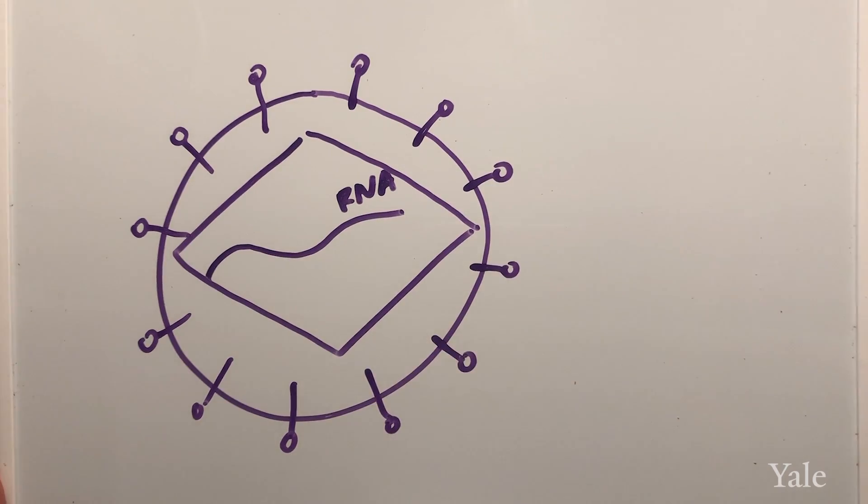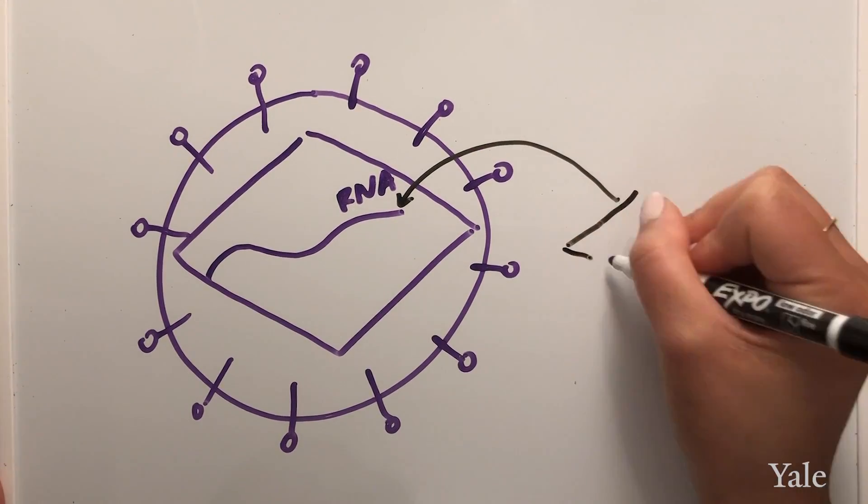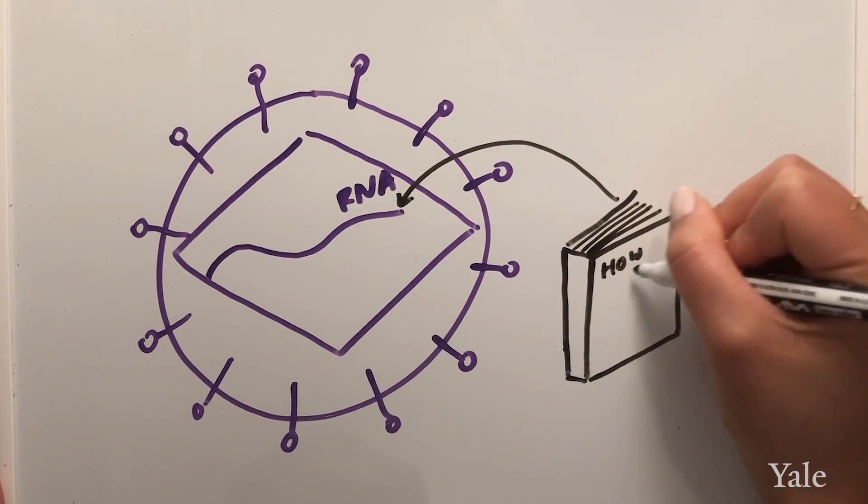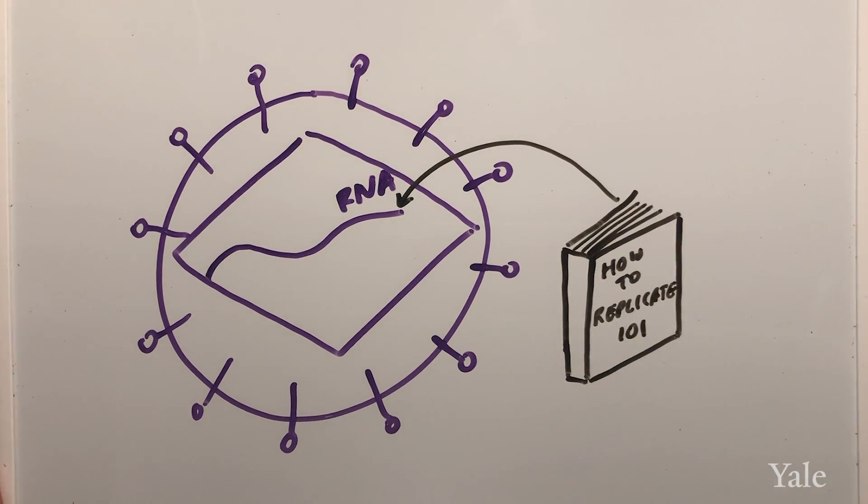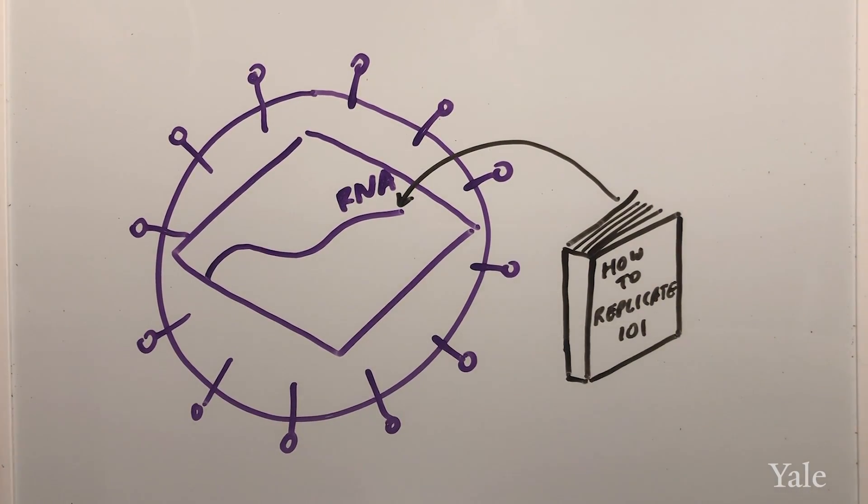Spike proteins protrude out of the virus. The RNA has all the instructions for how this virus needs to replicate, if it had the proper machinery, but it lacks machinery to replicate so it has to infect a cell.